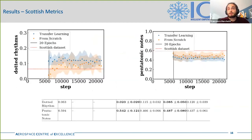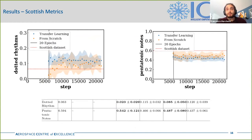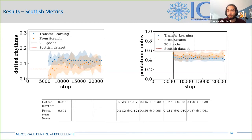While the transfer learning approach shows better performance for most metrics, this is not the case for the Scottish-specific metrics. The median values from learning from scratch are closer to the reference values of the training data. This suggests that although transfer learning generates more aspects of good music more quickly, it does not capture the characteristics of a new dataset as well as training from scratch. To obtain Scottish metric values closer to reference using transfer learning, one approach could be integrating these metrics into the loss function formulation of the second stage training, steering the learning process toward Scottish music characteristics while maintaining robustness on other metrics.